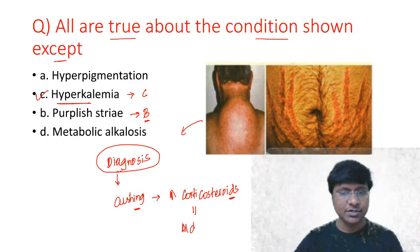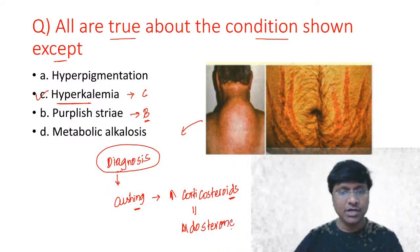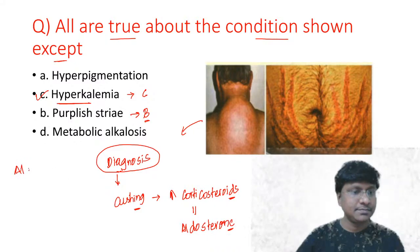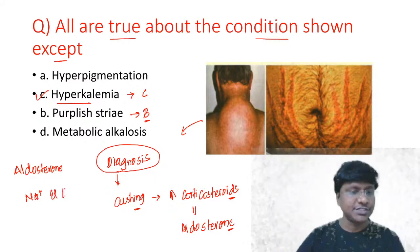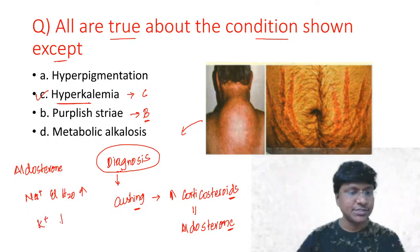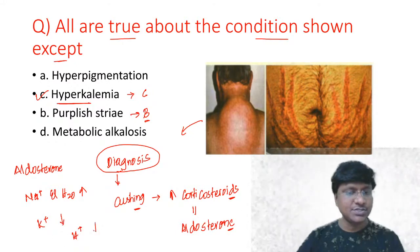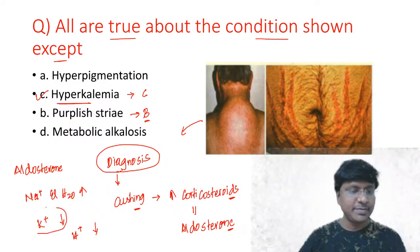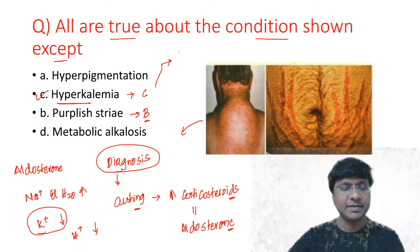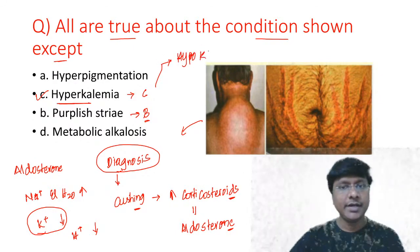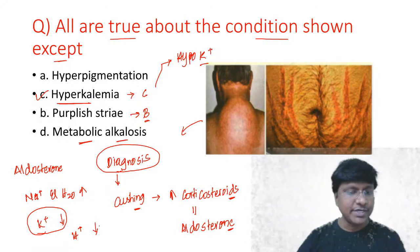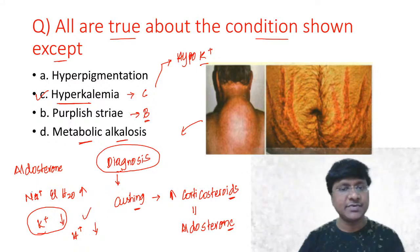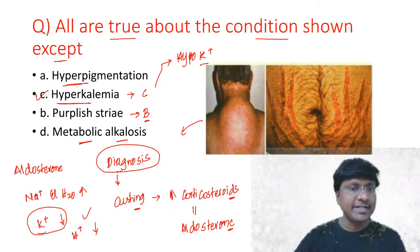Aldosterone causes sodium and water retention, and potassium excretion. So potassium levels and H+ ion levels will be decreased. Because potassium levels are decreased, they will not have hyperkalemia — what they will have is hypokalemia. They will also have metabolic alkalosis, because H+ ions are being excreted out.